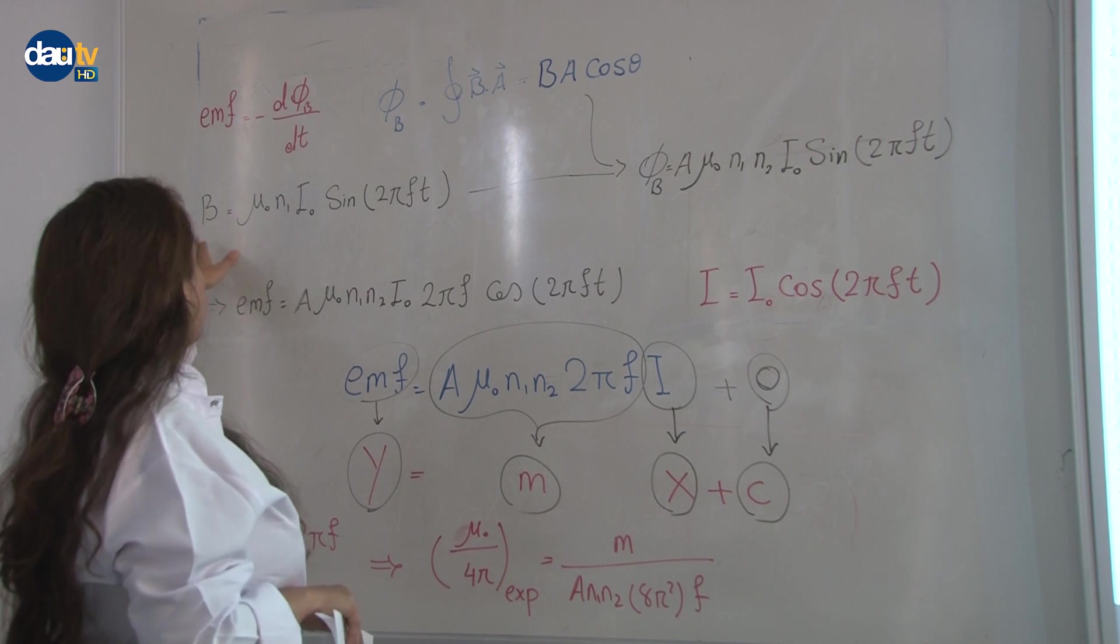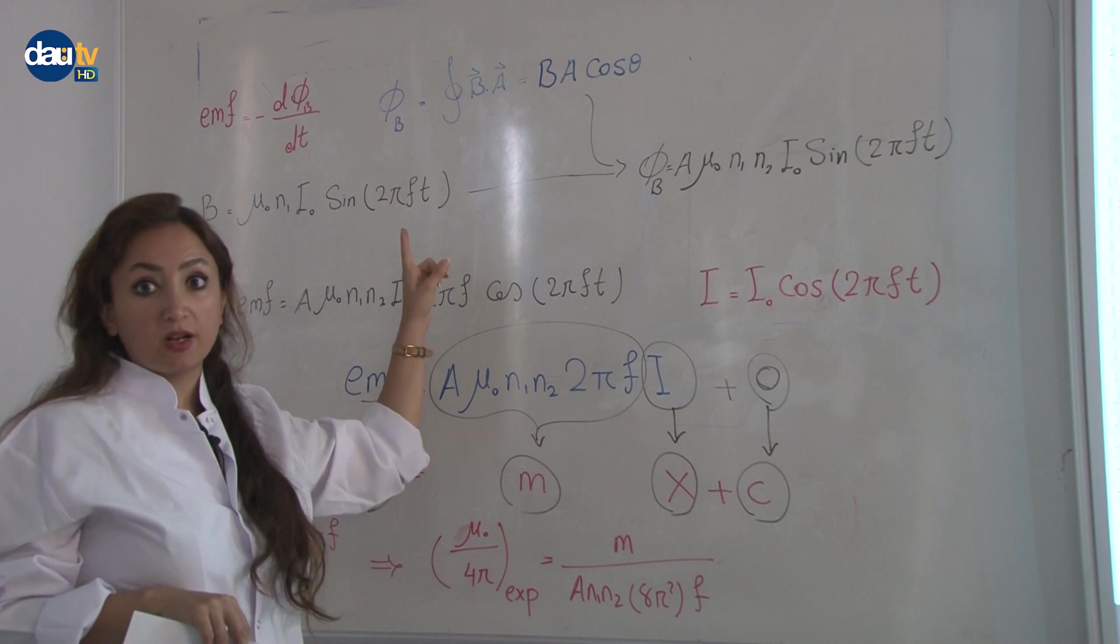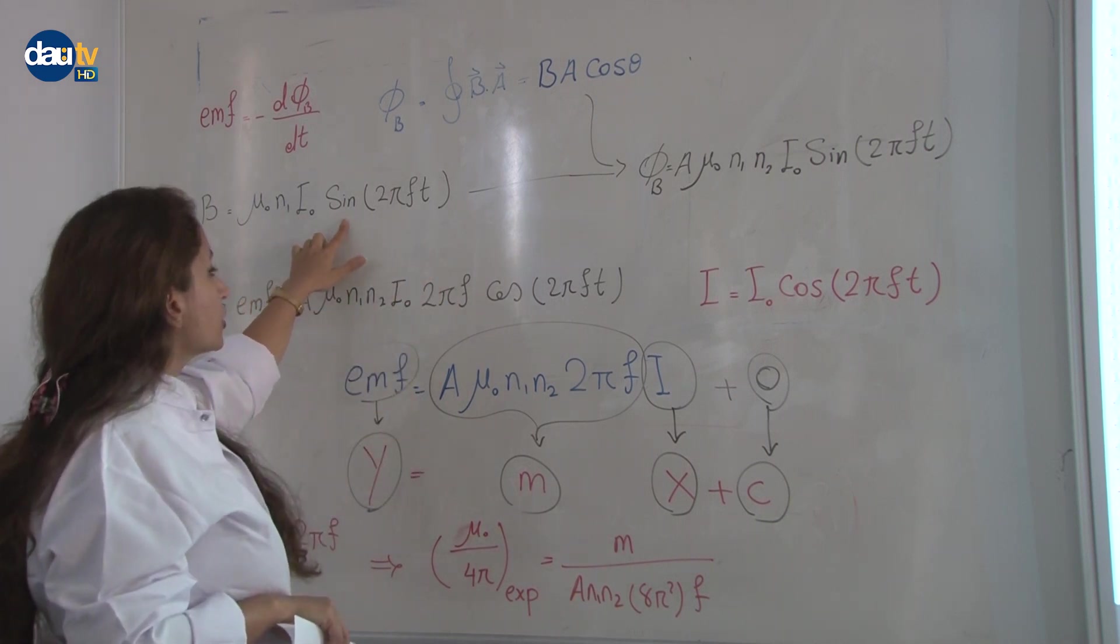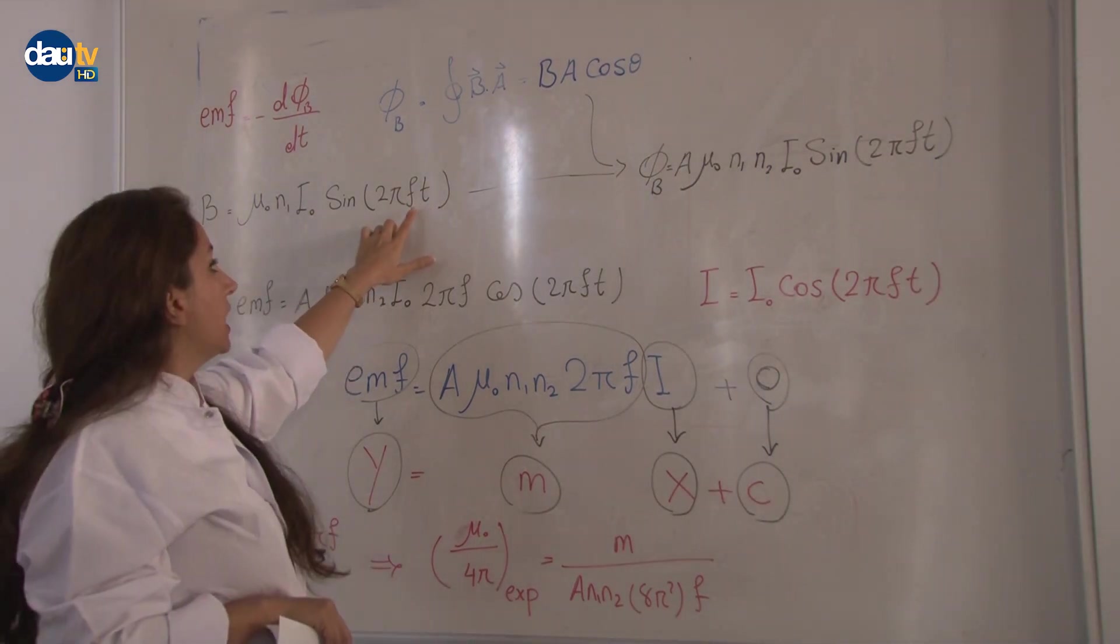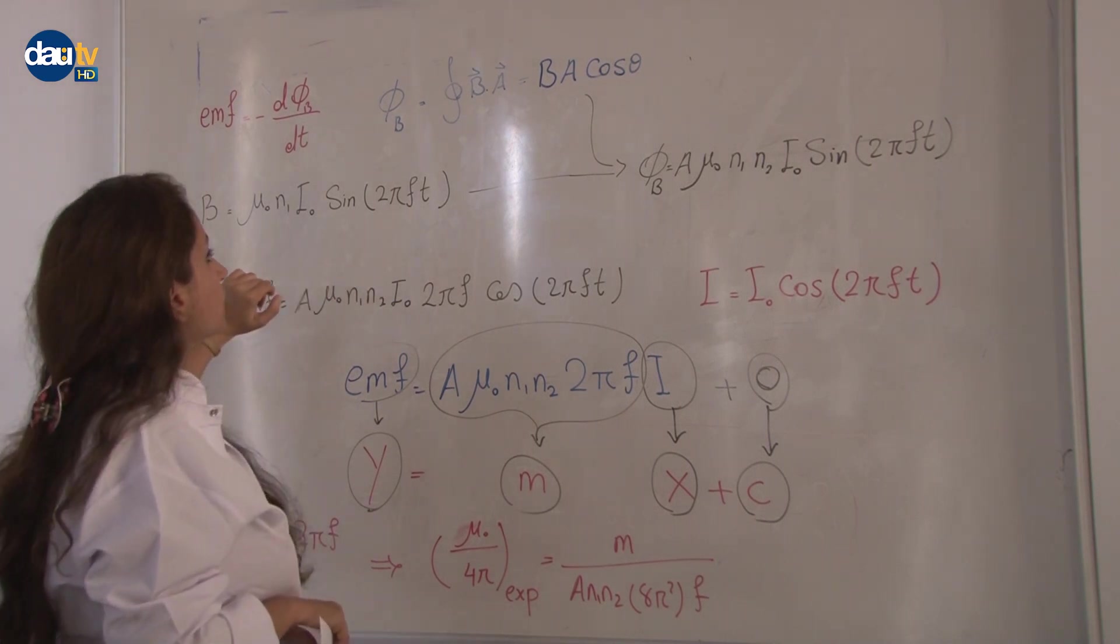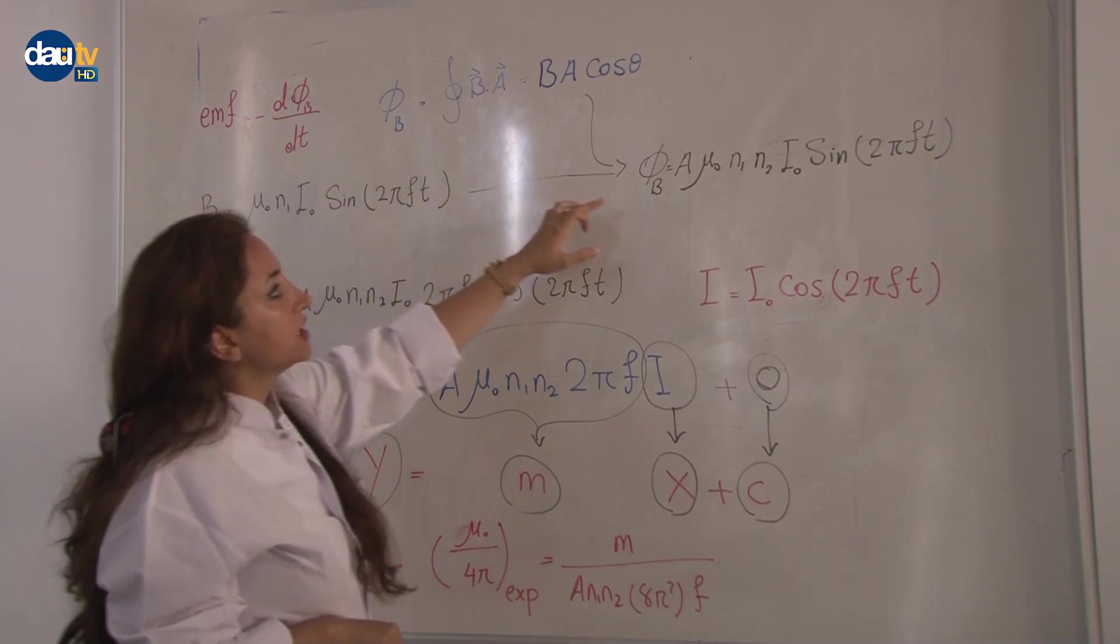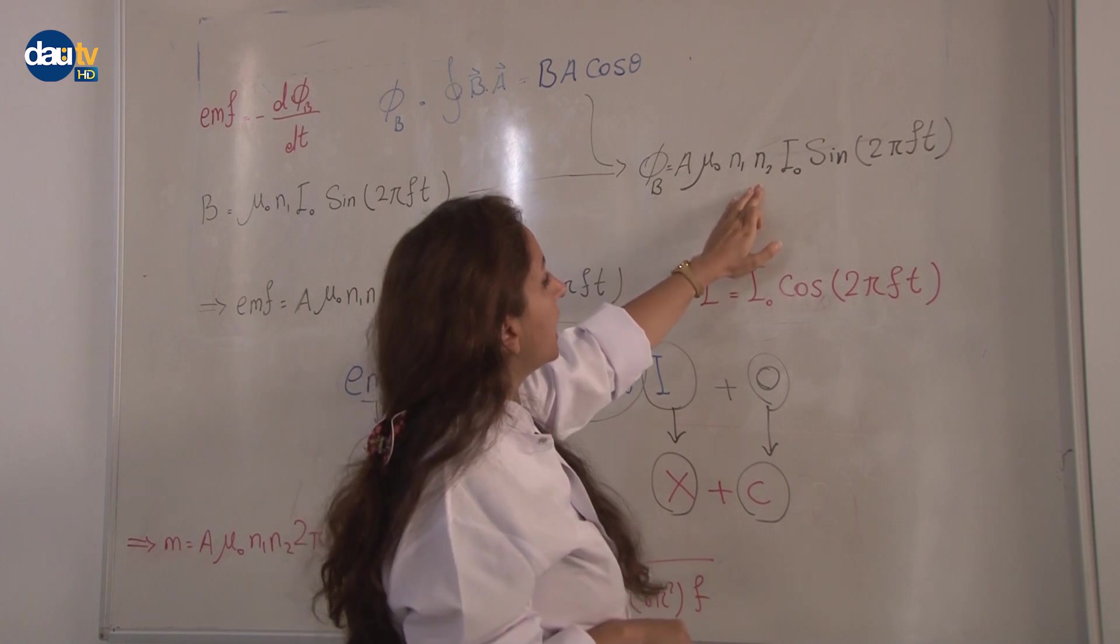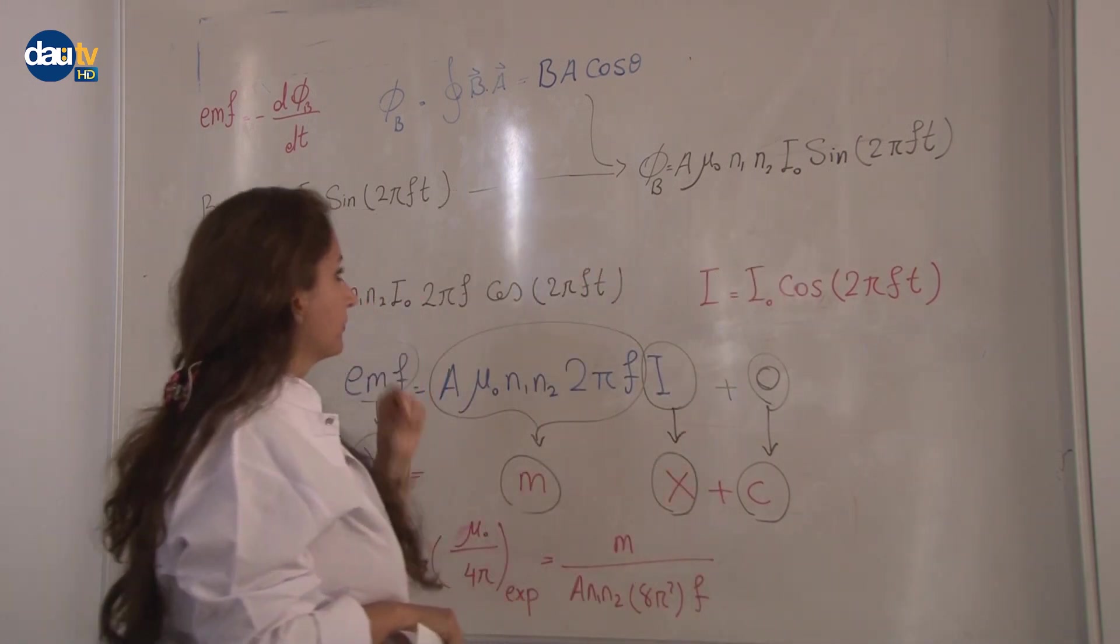The magnetic field for two solenoids, here is for one solenoid first, mu zero N1 I zero sine two pi f t, t is time, f is our frequency, and two pi is a constant. For writing phi B, we can combine these two equations together and write it A mu zero N1 N2 I zero sine two pi f t.